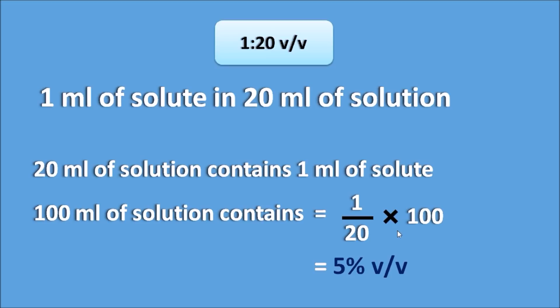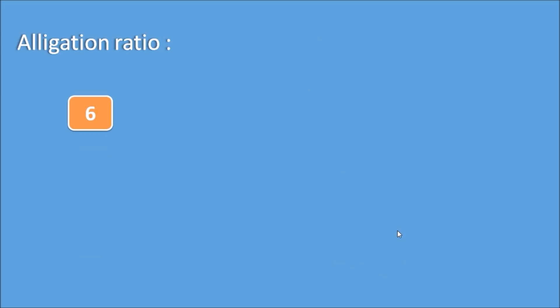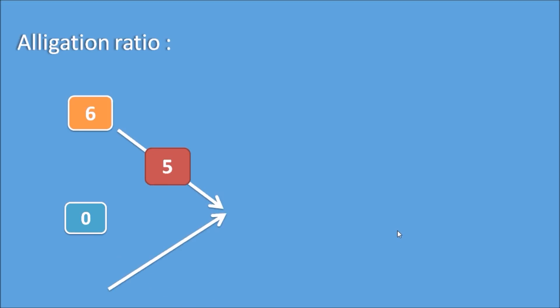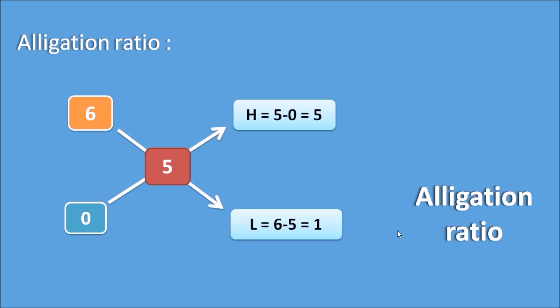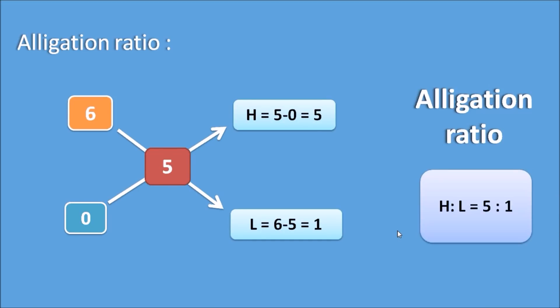Now applying the allegation using the converted units: higher concentration is 6% v/v, lower concentration is 0% (water), and the final concentration required is 5% v/v. So H is equal to 5 minus 0, which equals 5, and L is equal to 6 minus 5, which equals 1. The allegation ratio is 5 is to 1. We have to mix 5 parts of the higher concentration with 1 part of water to produce the 5% v/v intermediate concentration.